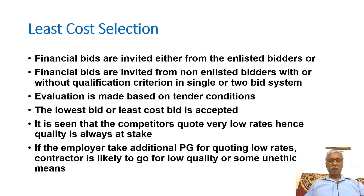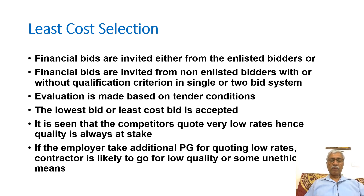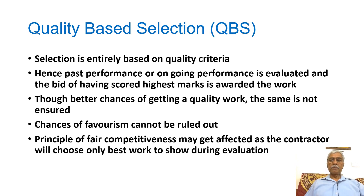Some organizations have started requiring an additional performance guarantee (PG) if someone quotes low rates — for example, if a bid is 10 percent below the estimated cost put to tender, an additional PG of 10 percent or more is asked from the contractor. However, if a contractor has already quoted low rates and is further asked for additional PG, it is very likely that they will either deliver lower quality or engage in unethical practices. Therefore, LCS is considered in need of revision.